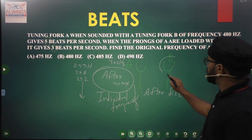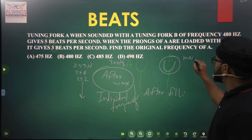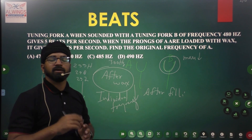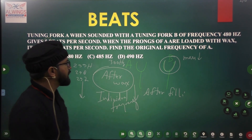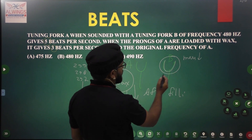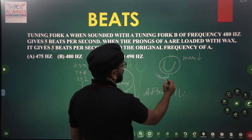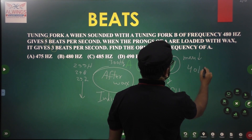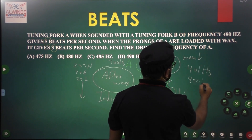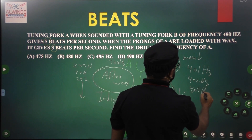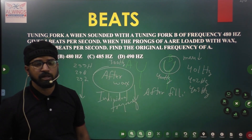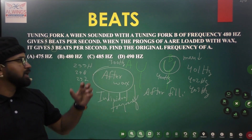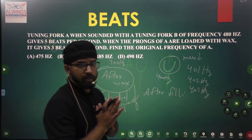Similarly, if we are filing any tuning fork, its mass will decrease and the prongs will become lighter, so they can vibrate with a higher frequency. Suppose frequency of B before filing was 400 Hz — after filing its individual frequency will increase to 401 Hz, 402 Hz, 403 Hz and so on. It cannot be less than 400 Hz after filing. So: after waxing, individual frequency decreases; after filing, individual frequency increases.